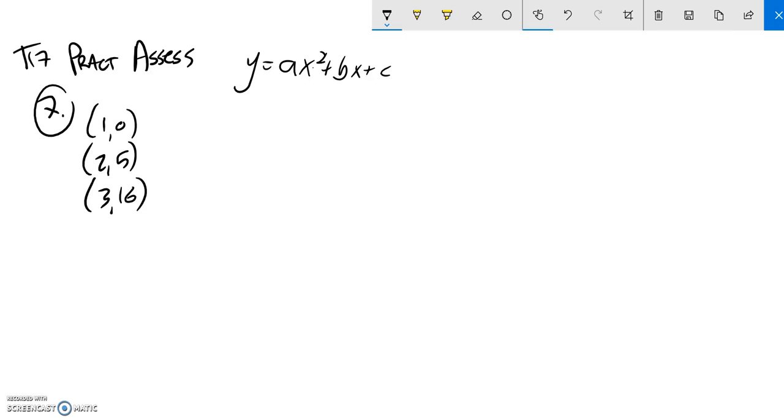And so what I'm going to do is I'm just going to plug in these values. Remember, points come in the form x, y. So when y is 0, x is 1. So I'm just going to plug that in. When y is 0, when x is 1. And notice that that is just the equation a plus b plus c equals 0.